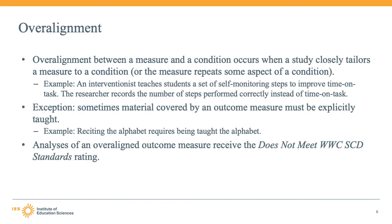Next, the WWC's outcome requirements state that outcomes must avoid overalignment with the baseline or treatment conditions. Overalignment occurs when a study closely tailors a measure to a condition or the measure repeats some aspect of a condition. If a study closely aligns or tailors outcome measures to the intervention condition, the study findings may not accurately indicate the effect of the intervention.